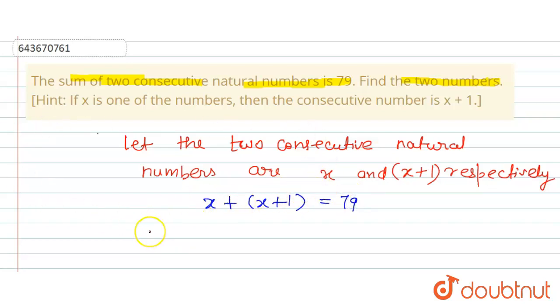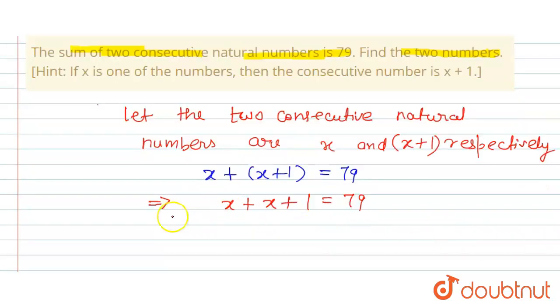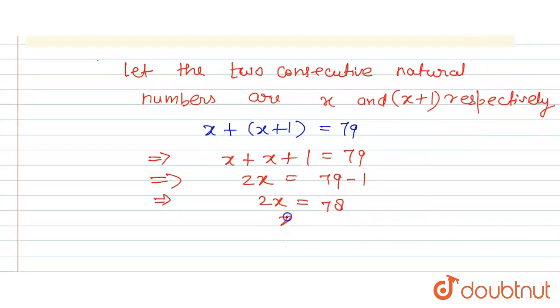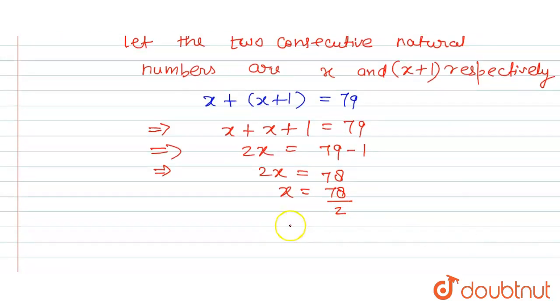Now we will solve for x. So here x plus x plus one is equal to 79. x plus x becomes 2x, and one we will take to the right-hand side, so this becomes minus one. So 2x is equal to 79 minus one, that is 78. Now x can be written as 78 by 2. 2 will be taken to the right-hand side with denominator. So here x is equal to, this cancels out, so this is 39.